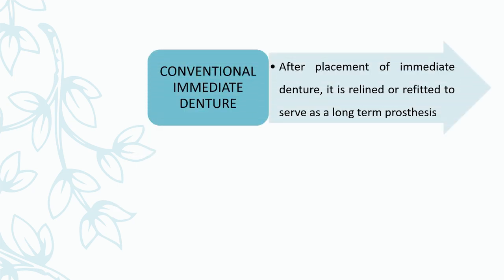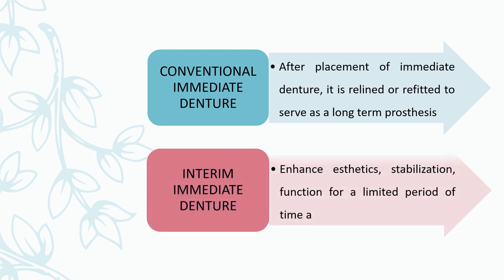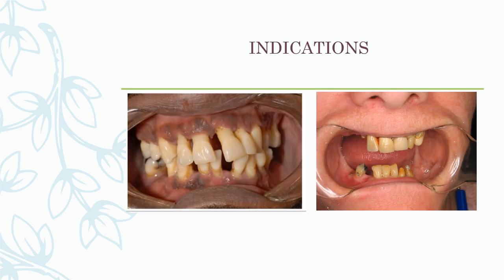There are two types of immediate dentures. The conventional immediate denture is placed immediately after extraction, has to be relined or refitted, and serves as a long-term prosthesis. The second type is the interim immediate denture, which enhances aesthetics, stabilization, and mastication for a limited period of time, and has to be replaced with a successive long-term prosthesis.